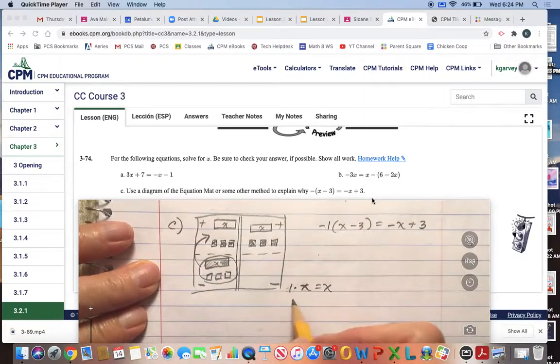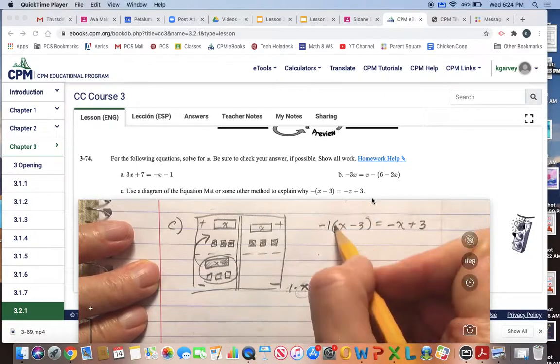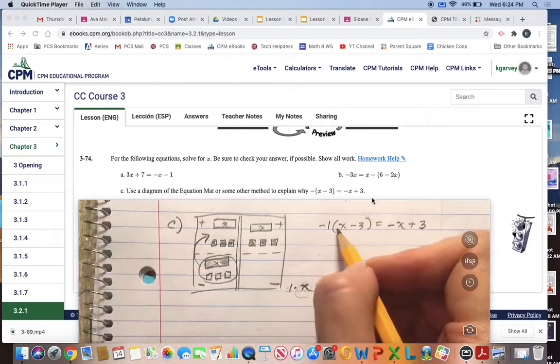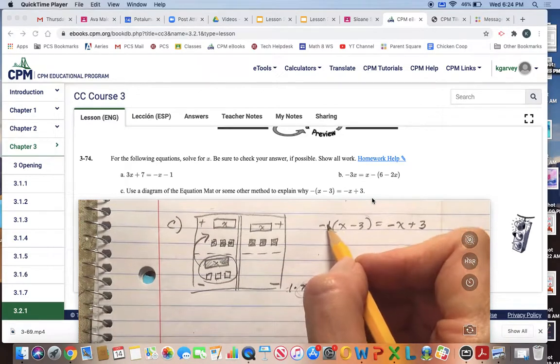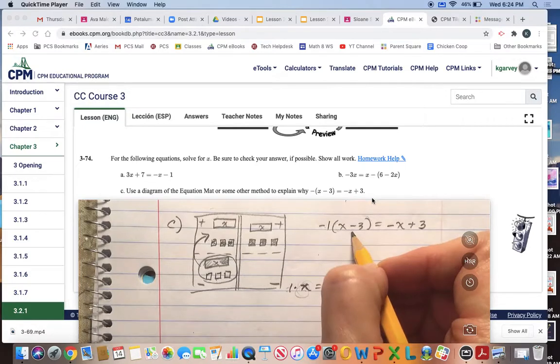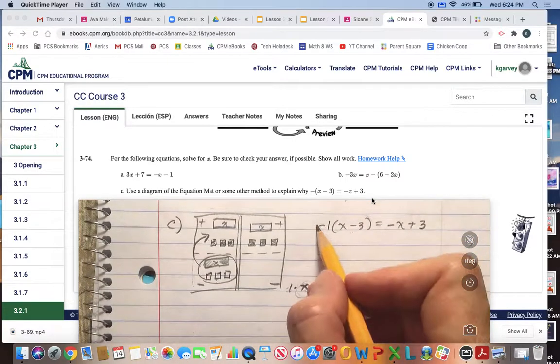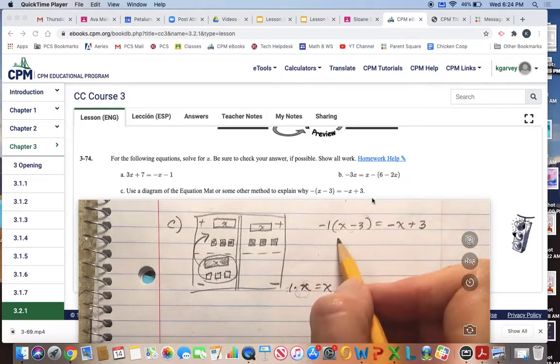You can always assume that anything with a variable has a 1 in front of it. So 1 times whatever that is, is always going to equal that value. So we can assume when there's a negative sign that there's really a negative one in front.